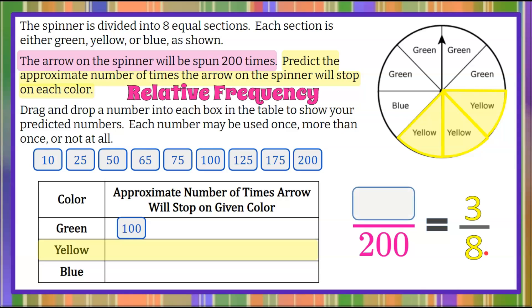So we're going to write our ratio. Our probability for yellow is three out of a possible eight outcomes. To solve our proportion, we know that eight multiplied by 25 was 200. Therefore, three times 25 is going to give us our relative frequency. Three times 25 is 75.